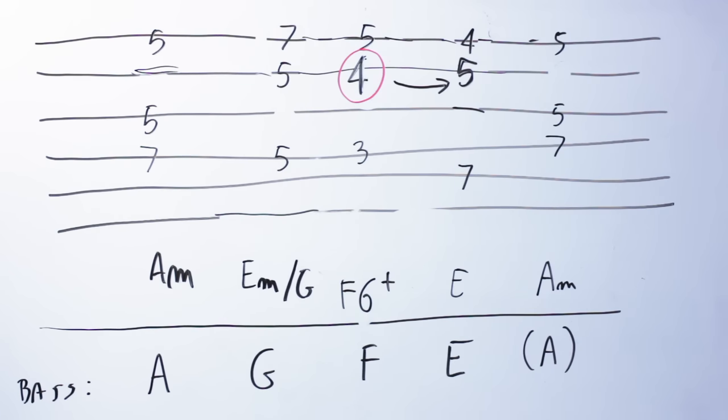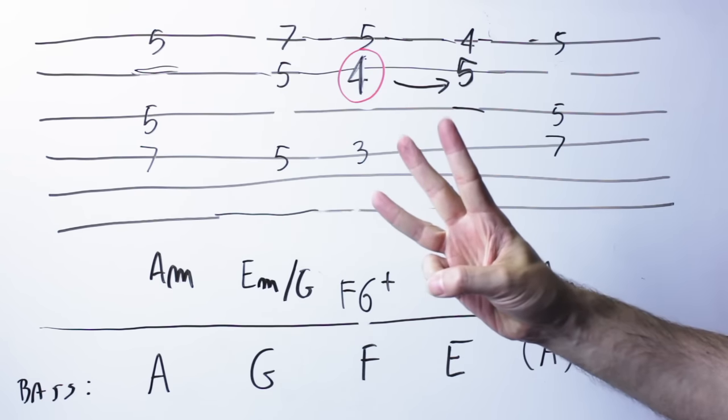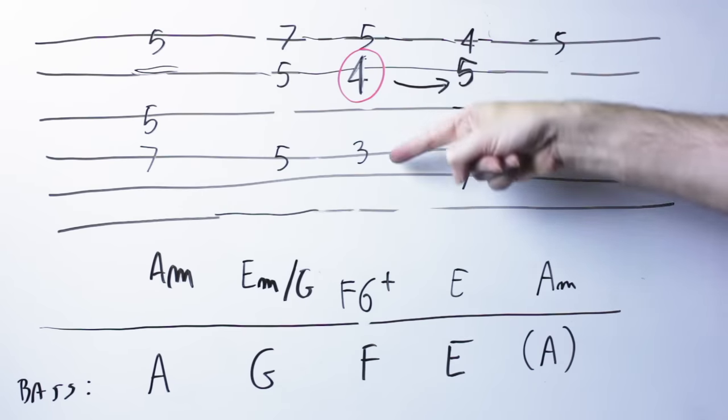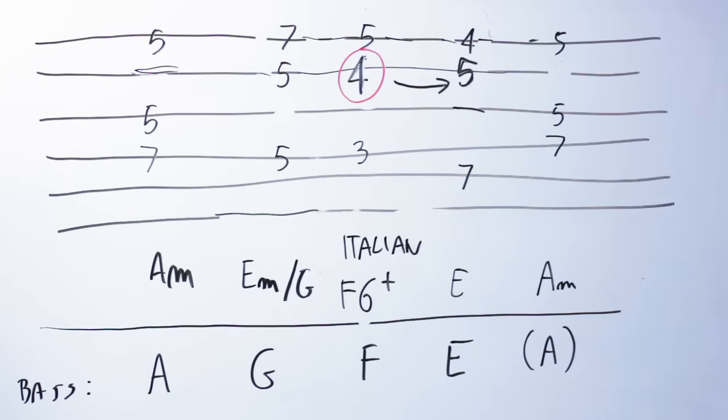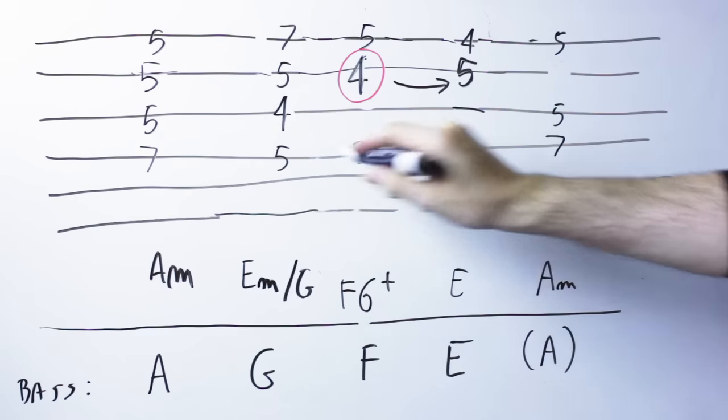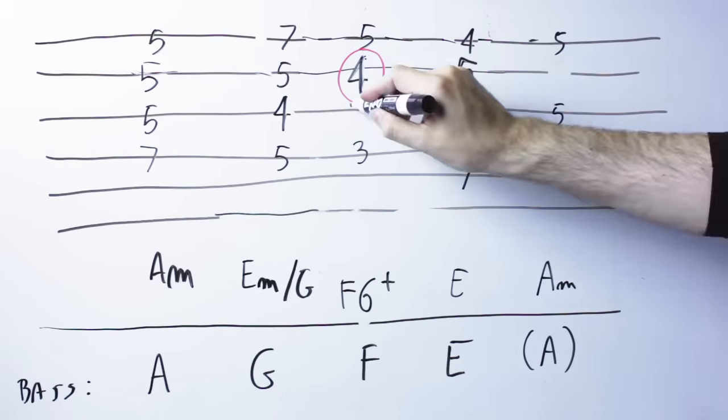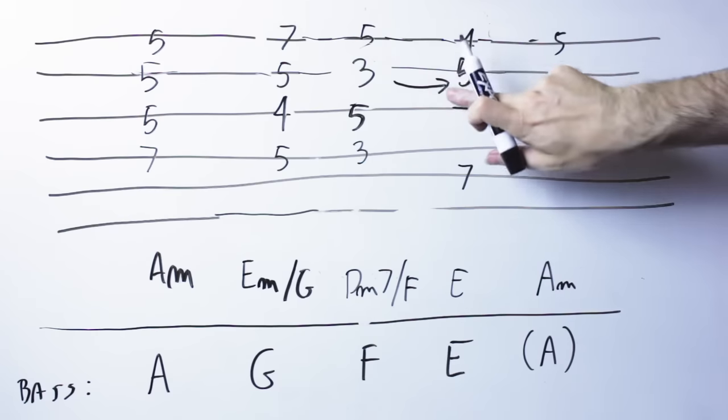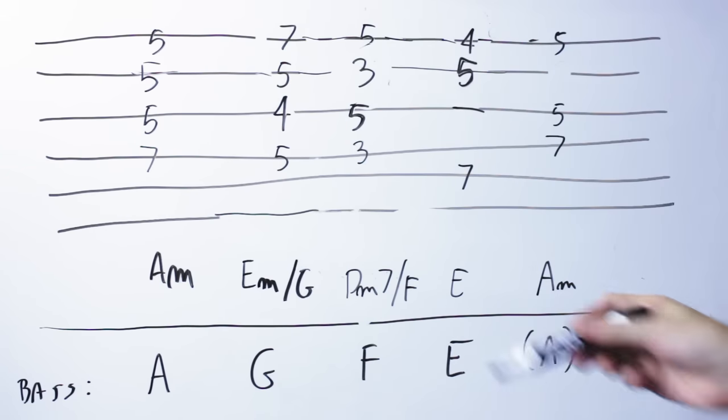Now, so far, I've played all those chords in three notes, and the version of the augmented sixth I found is what in jargon is called the Italian augmented sixth. But I could play everything in four voices. In this case, my starting progression would be A minor, again, E minor with a base of G. On the F, I would actually play a D minor seventh with a base of F, and then the E major.